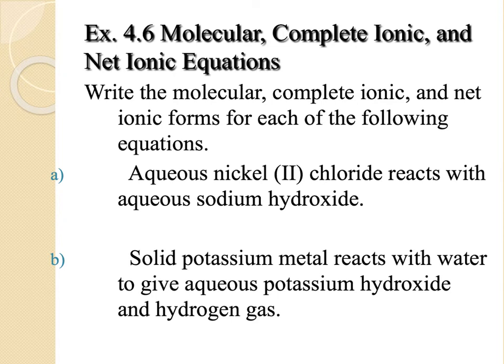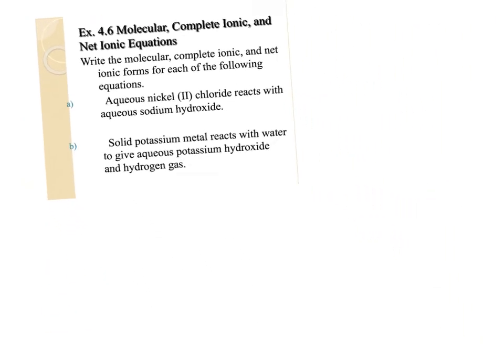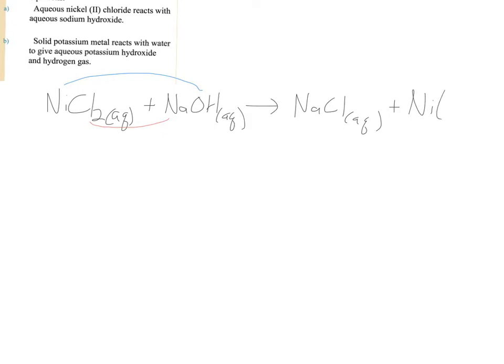Here we need to write the molecular, complete ionic, and net ionic forms for each of the following equations. Let me start out with the molecular equation for just part A. We'll separate these up here. So part A, aqueous nickel-2-chloride reacts with aqueous sodium hydroxide. If we try to trade the partners, we would see we get Na and Cl, and then nickel and then the hydroxide would go together. So we would see what they would make on the other side. The sodium chloride, NaCl, that's going to be aqueous. And nickel hydroxide, Ni(OH)2, that must be our precipitate. Okay, so there's our molecular equation that has everything as it is.